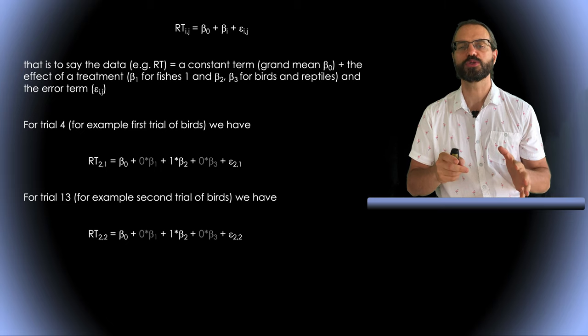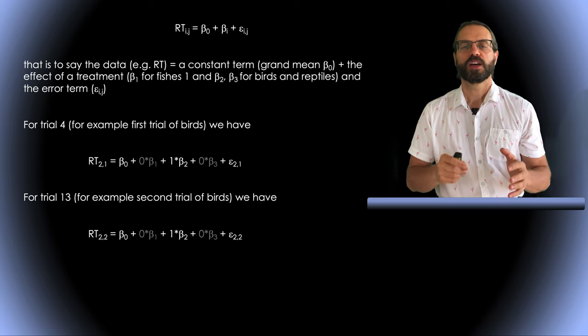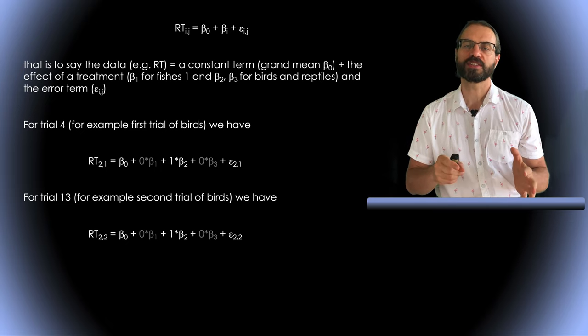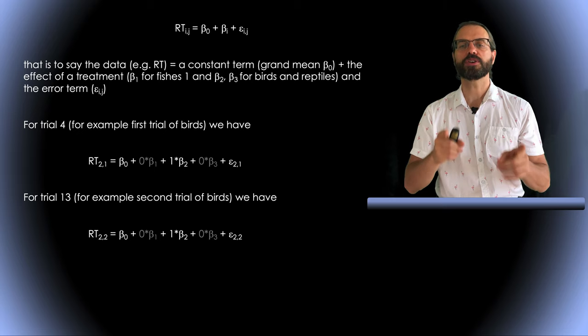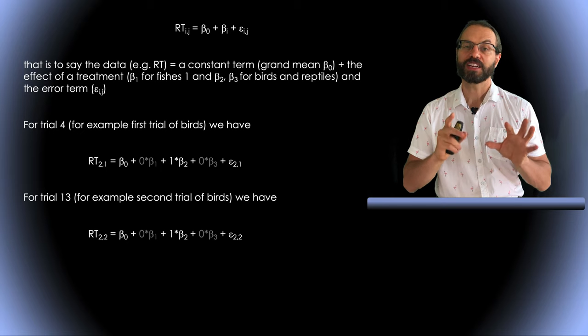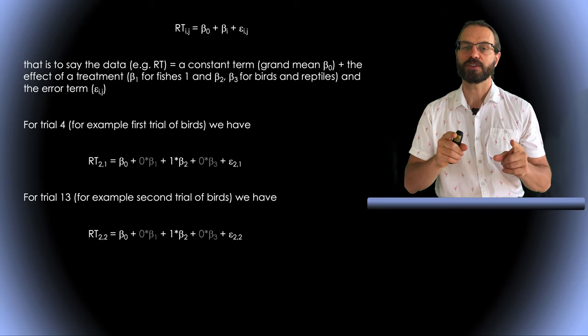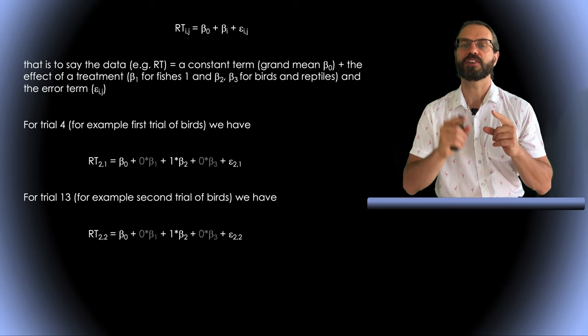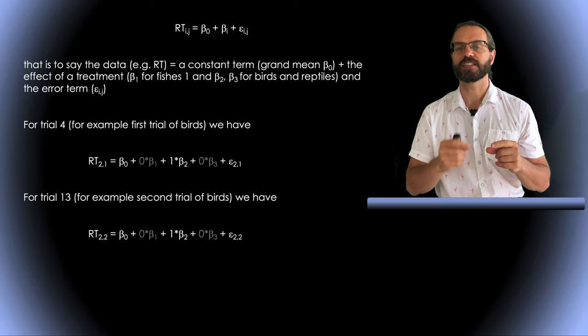For example for trial four which would be the first presentation of fishes we have reaction times equal to beta zero plus beta two plus the error term. For trial thirteen which would be the second trial containing an image of birds we have the same relationship with a different error term. Note that beta two is a number that cannot vary across trials only the error varies across trials for a given category of image.